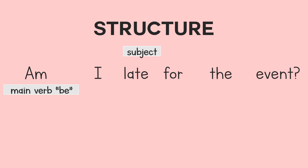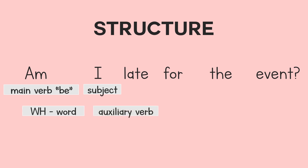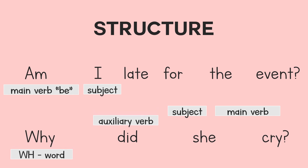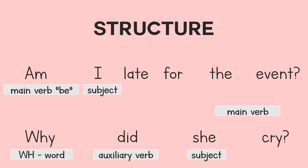Another structure is the WH word plus auxiliary verb plus the subject plus the main verb. For example, why did she cry? The WH word is why, the auxiliary verb is did, the subject is she, and the main verb is cry.